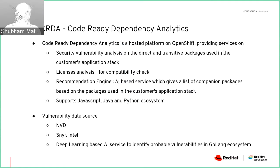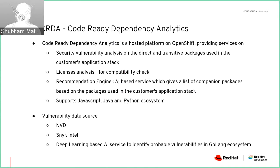CRDA is a dependency analytics extension which we can install in our IDEs. It helps us fight all the problems we discussed. CRDA is hosted on OpenShift and it provides services such as analyzing all the security vulnerabilities associated with your stack. It analyzes what type of license you should use, checks compatibility, and determines which license is best suited for you. Its recommendation engine is superb - it even gives you companion packages, showing what other packages you can use or what other application stacks people are using. It even gives you the GitHub stats of the newly recommended dependencies. This is how the CRDA platform helps in fighting those problems.